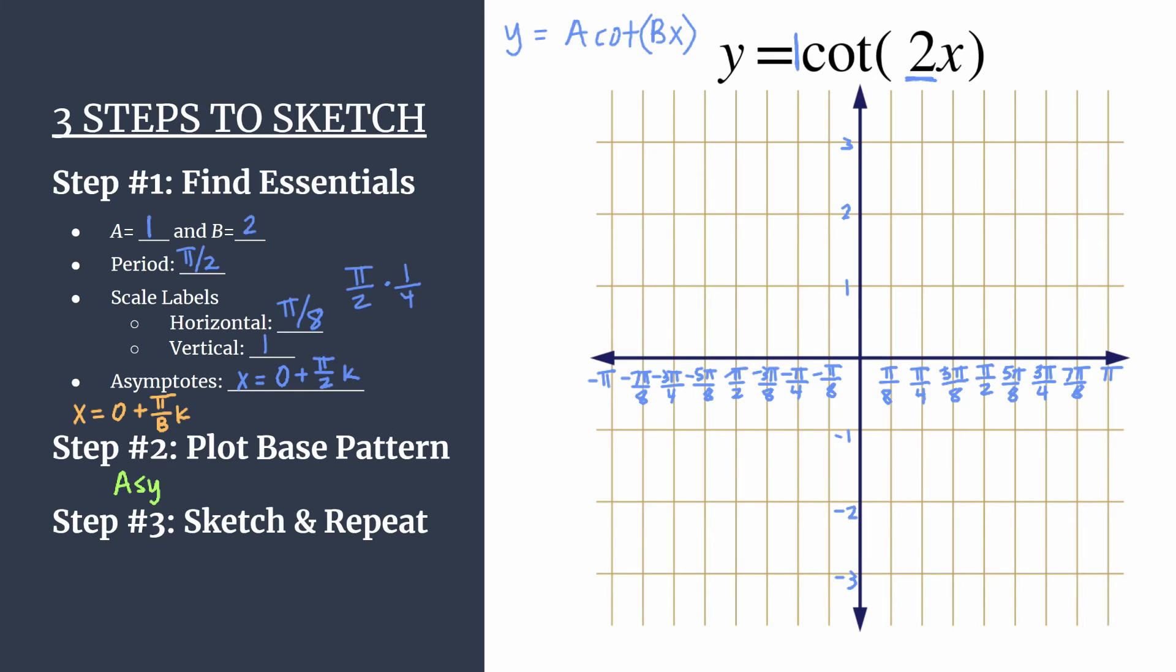Now recall that the base pattern for cotangent is going to be asymptote, point, that's a curve shaping point, zero, which is your x-intercept, and another curve shaping point. So in general, it's the graph that looks like this. Okay, just a quick little sketch. It's nice to kind of have that in your mind.